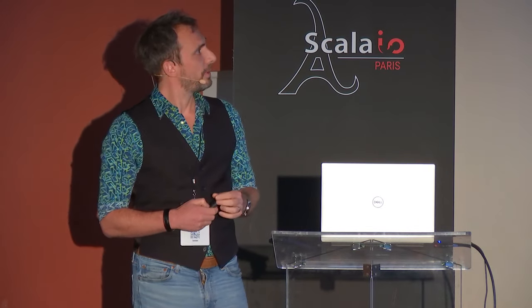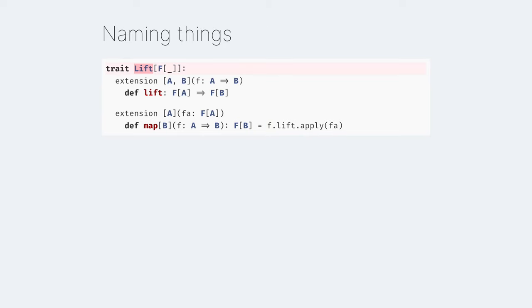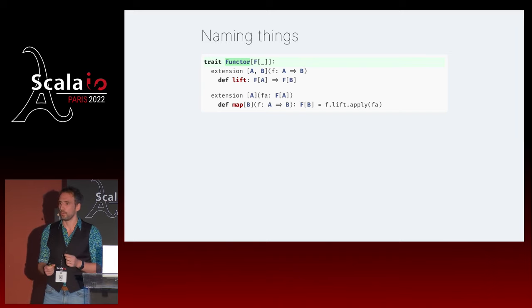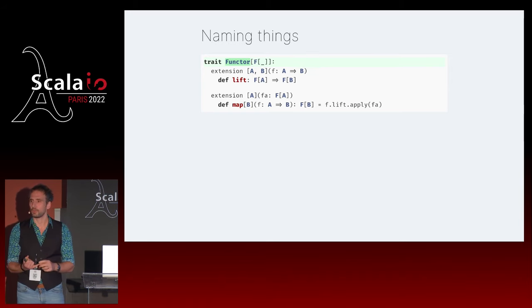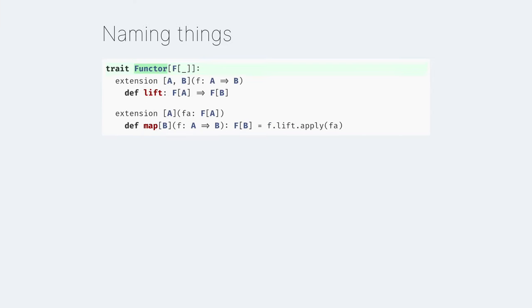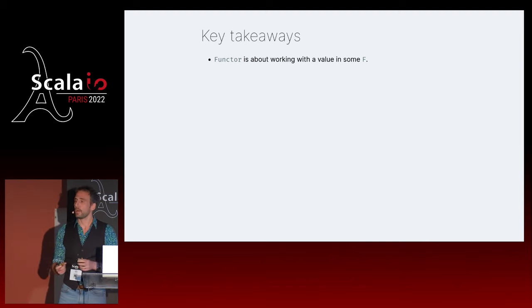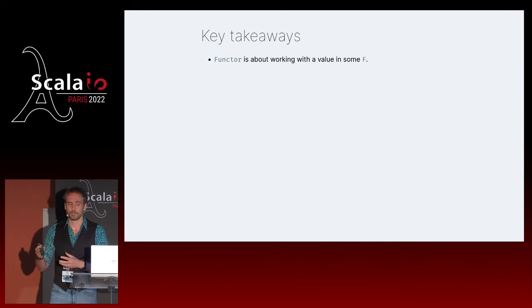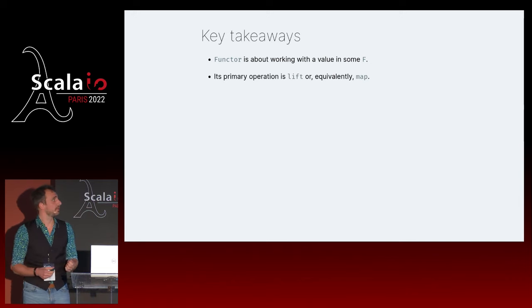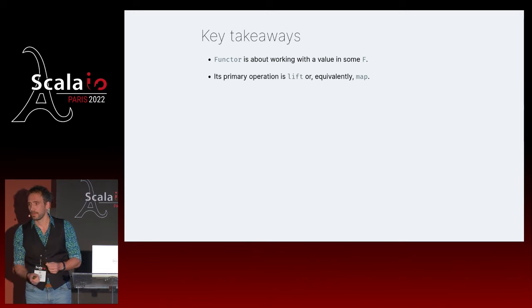Now that we have map and comfortable code, we need to name this thing - it's obviously not called lift. The actual name we use is functor. There are categorical reasons for why it's called that way; I'm not going to explain them, first because it's not really relevant to my point, and second because I really couldn't - I don't understand it. But this is called a functor. What have we learned so far? You use a functor when you have to work with one value within some F. The primary operation of a functor is lift, or equivalently, map.